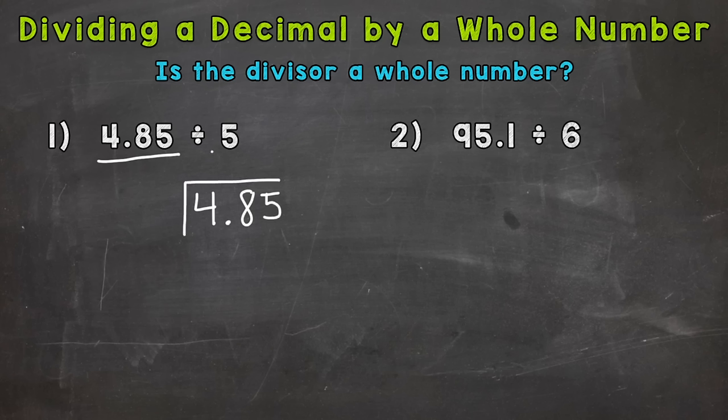And we are dividing by 5. So 5 is our divisor. It goes on the outside. Now, once we have our problem set up, whenever you see decimals within a division problem, you need to ask yourself a question. Is the divisor a whole number? And if so, if your divisor's whole, you can bring your decimal straight up.